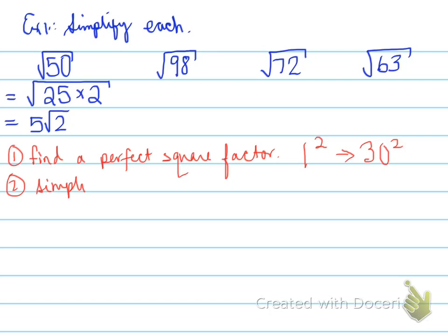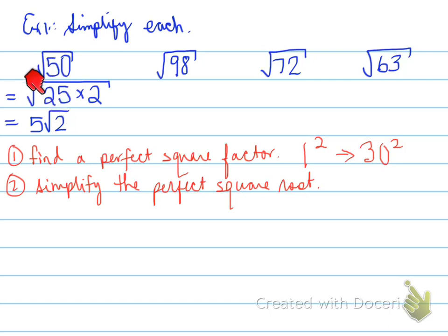Step two: simplify the perfect square root. In this example, the perfect square is the square root of 25, which simplifies to 5, and then we have root 2 remaining underneath.